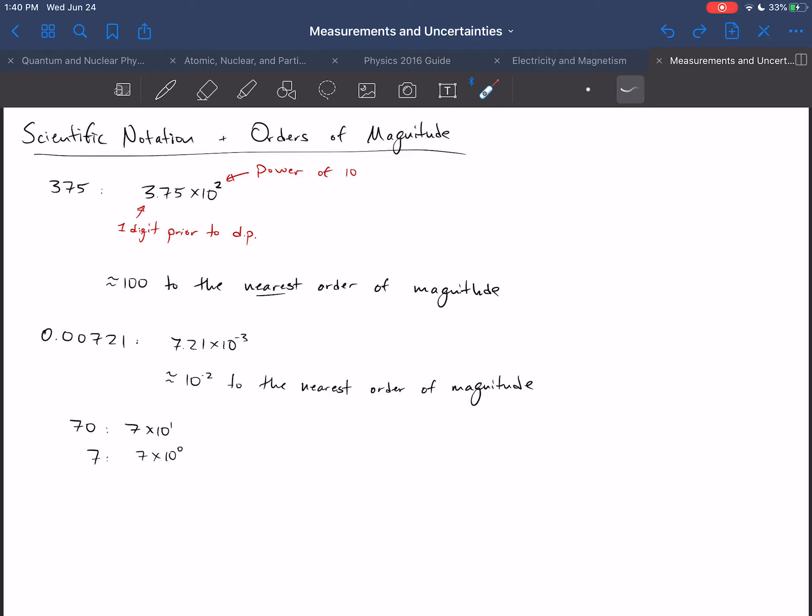Now, what is scientific notation? In scientific notation, you take whatever the number is, however it's represented, and you represent it so that there is exactly one digit prior to the decimal point. So, 375 becomes 3.75, and then you use a power of 10 to represent that number. So, 3.75 times 10 to the 2 means the same thing as 375.